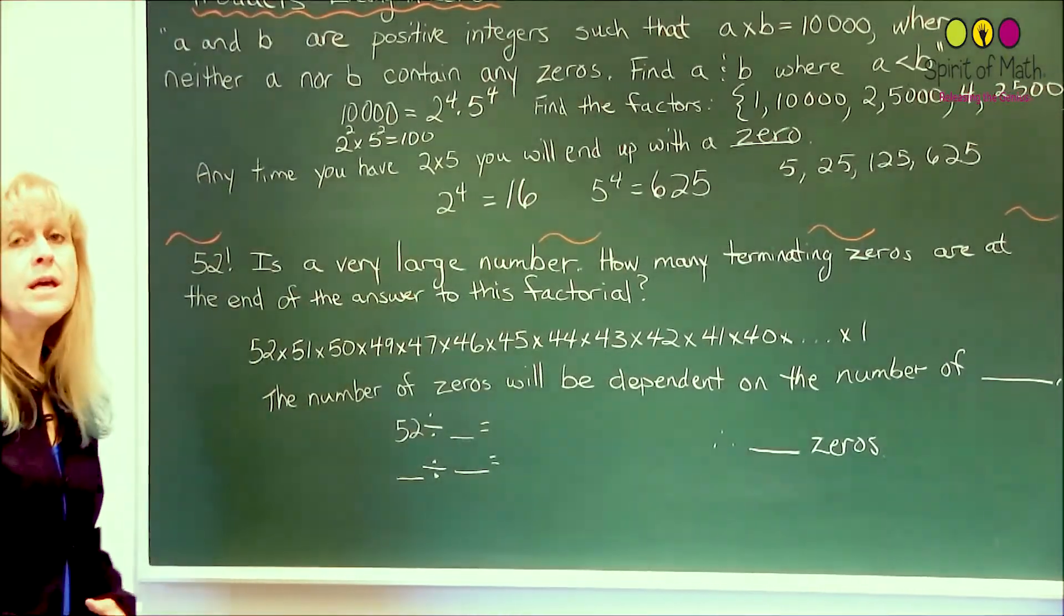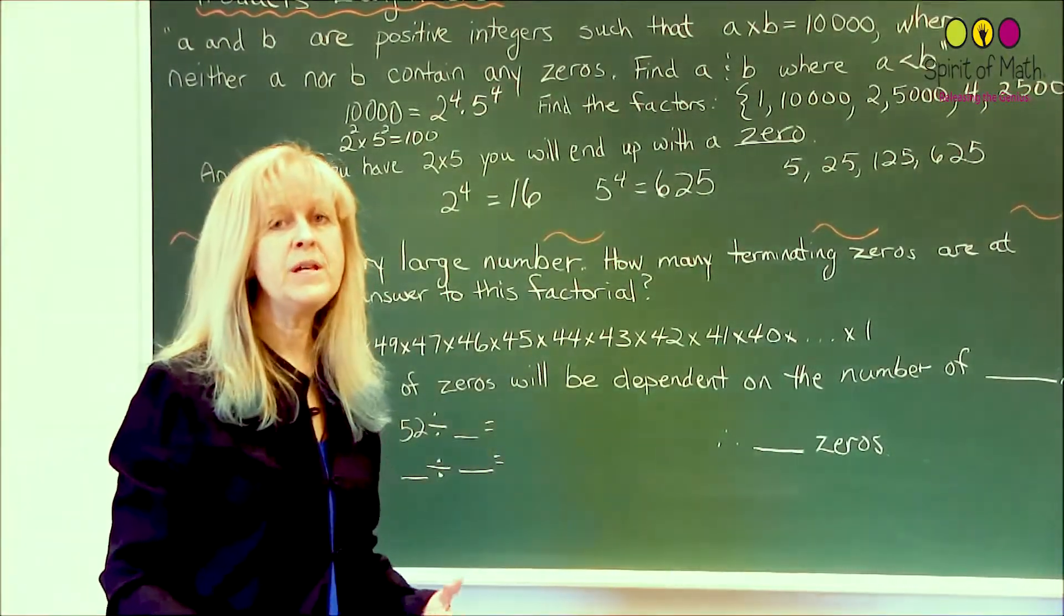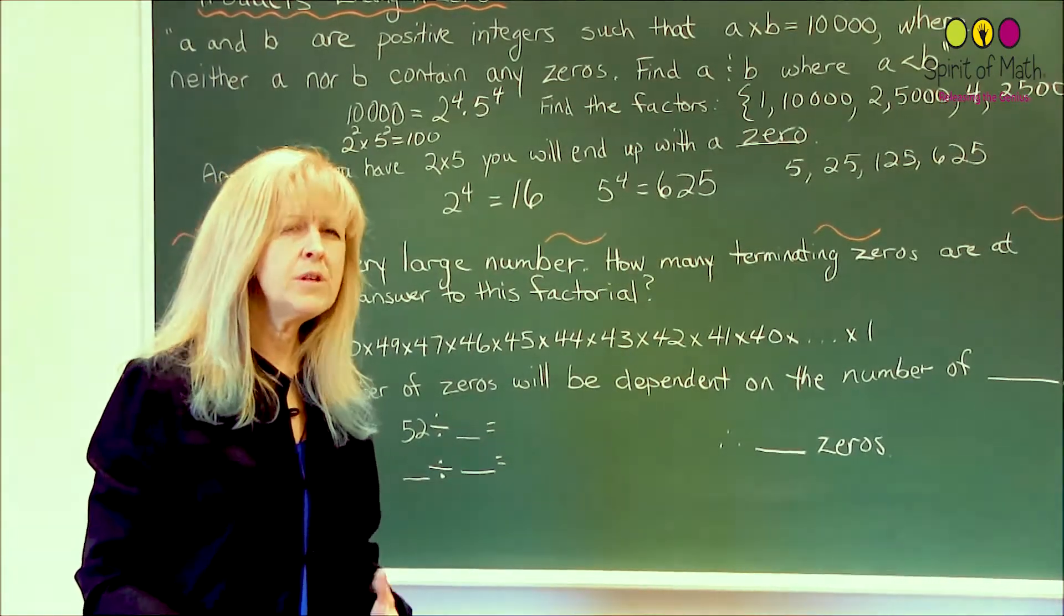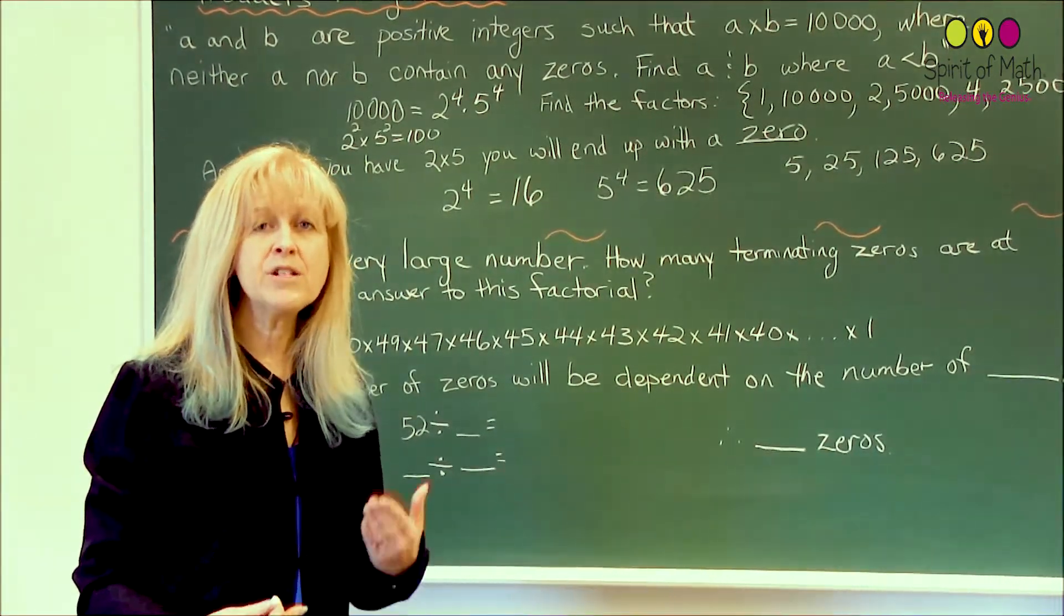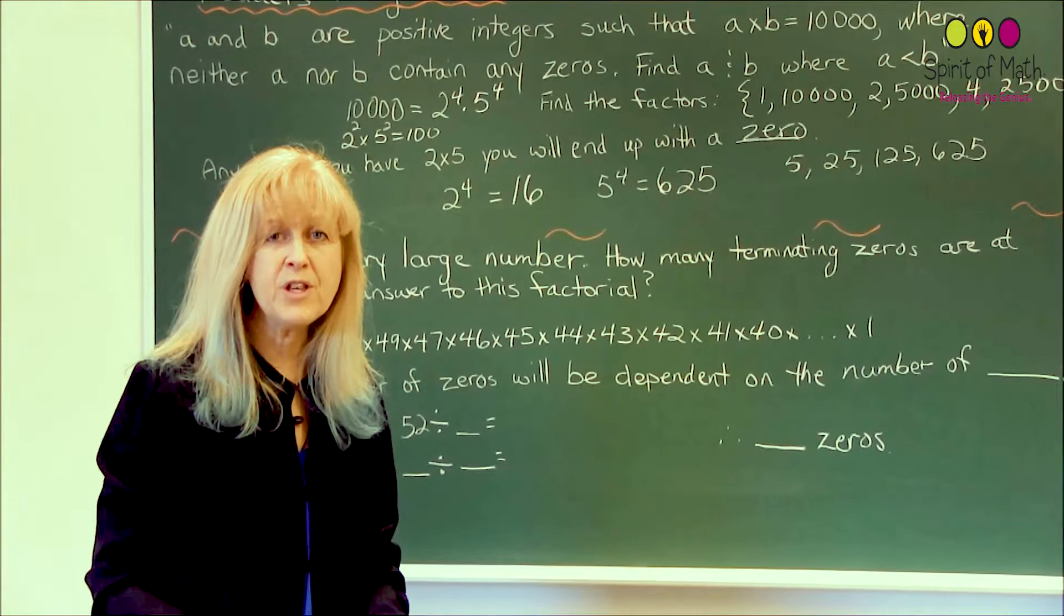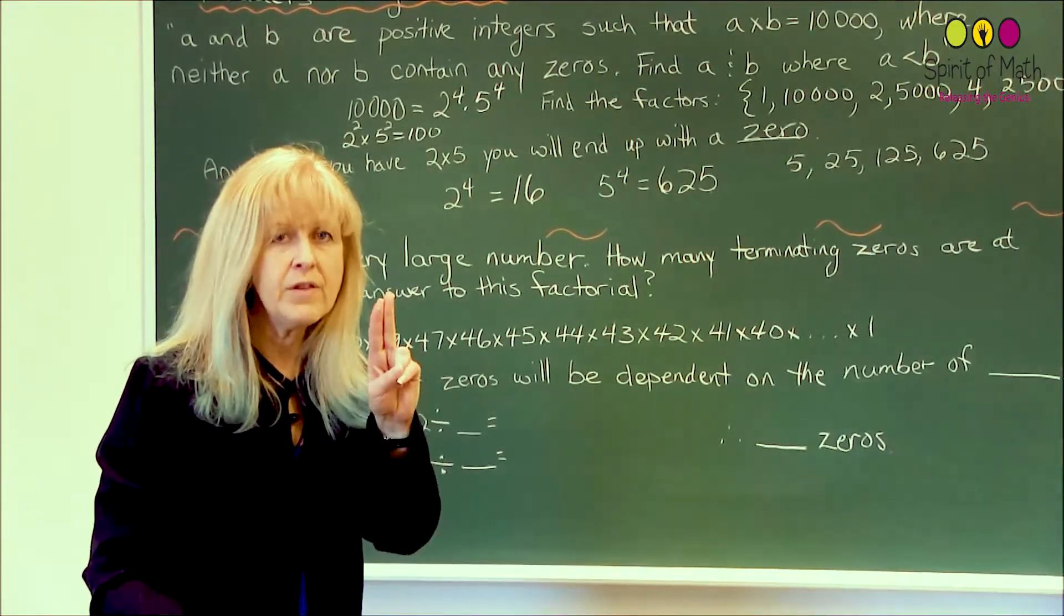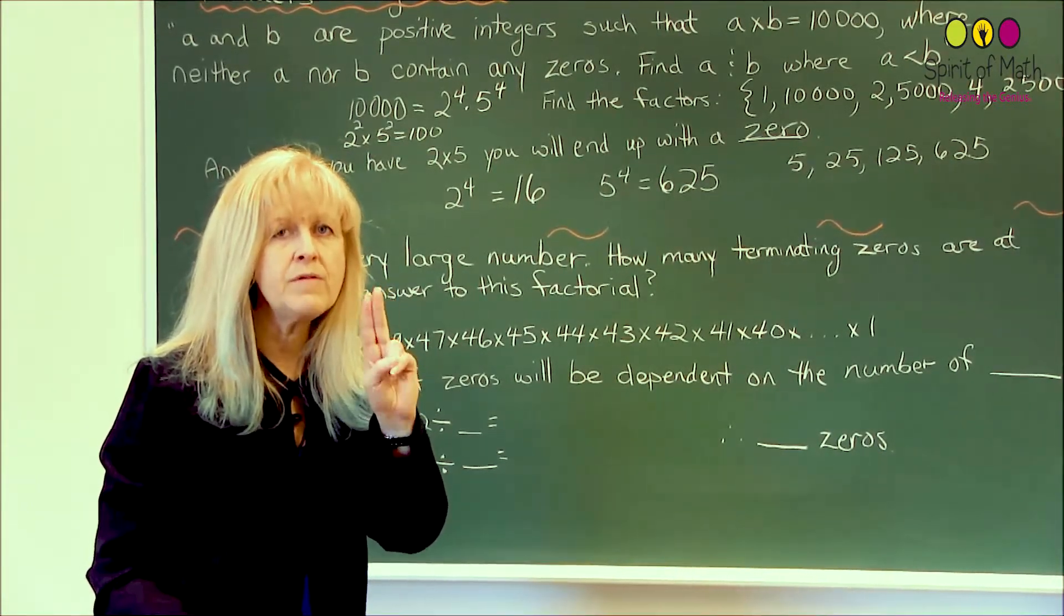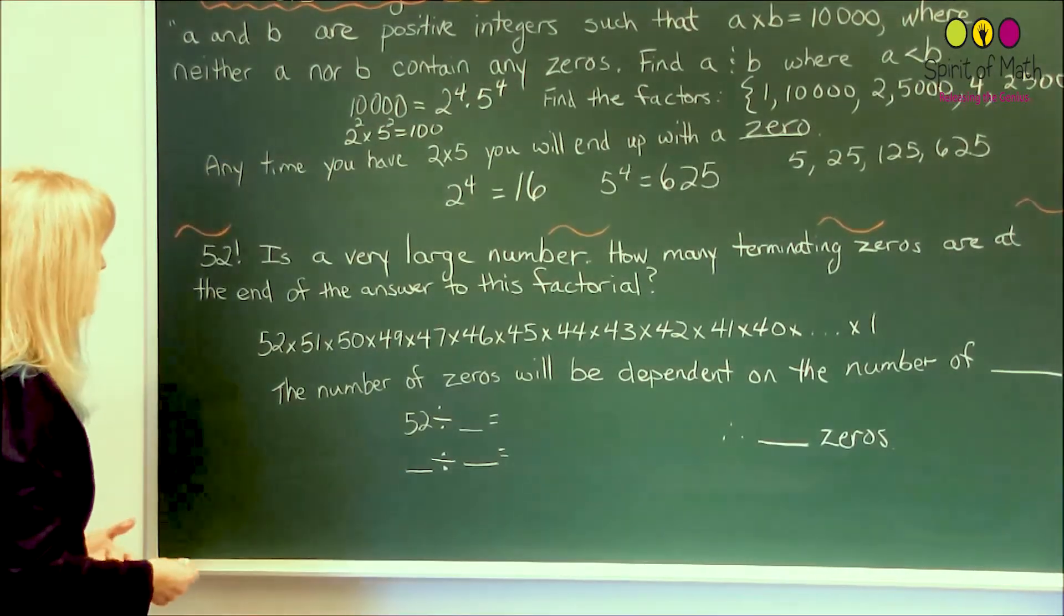Now, again, in this case, you want to know how many zeros, so you'll need to find out how many pairs of 2 times 5 you will have, how many of that product, how many 2 times 5s you will have.